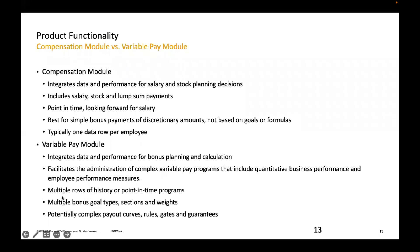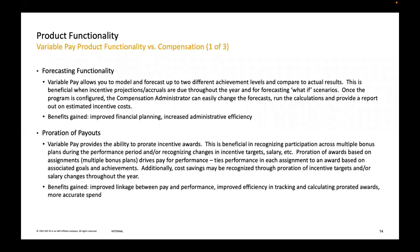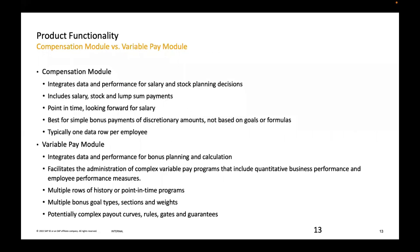Multiple bonus plans — we've already talked about that. Potential complex payout curves, rules, gates, and guarantees refer to things like when paying a bonus: do we have any capping, what method are we using — interpolation, step, or direct amount — and how the target amount is calculated, whether it is forced to 100% or can exceed 100%. These are all things to discuss with the customer.